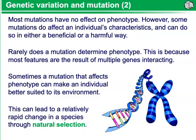Natural selection requires variation in heritable traits — genetic variation — to occur. Individuals with phenotypes that make them well suited to their environment are more likely to survive and produce offspring. As a result, the genes of these individuals are more likely to be passed on to the next generation.